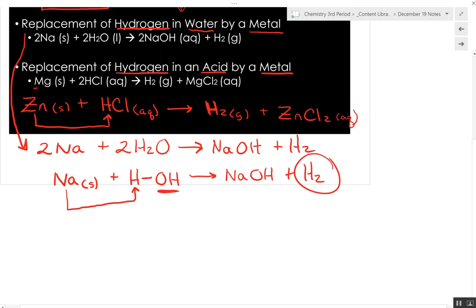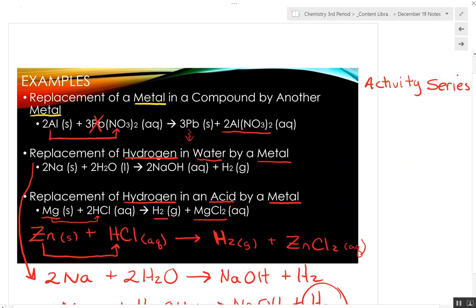And we just did this here with magnesium. Take magnesium, put it in the hydrochloric acid, it knocks the hydrogen off. Hydrogen gas is formed and magnesium chloride is formed. So this is examples of single replacement reactions.